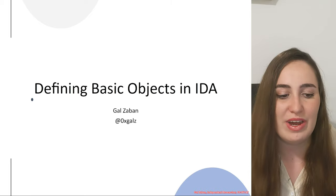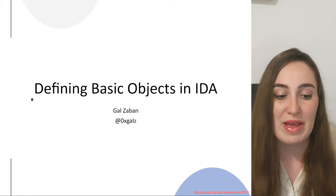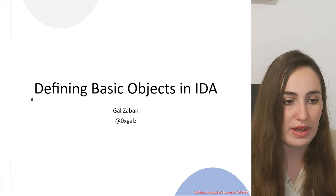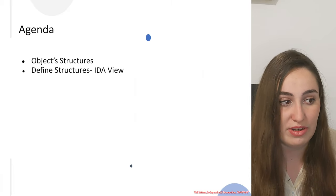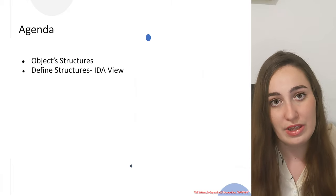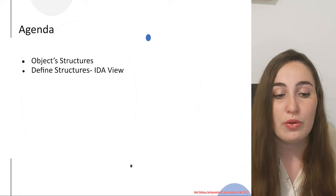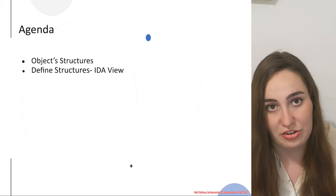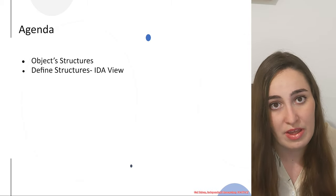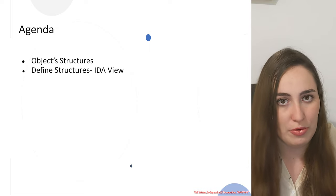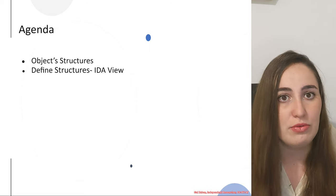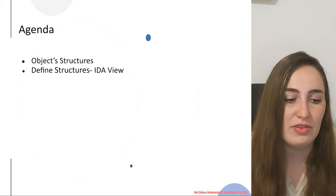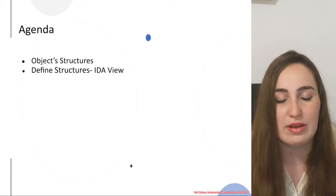In this topic, we will define basic objects in IDA. We'll discuss both how different object structures look like, but we will also see how to define the structures themselves. And we will have a short demo to demonstrate how to create the structures and to show some examples.